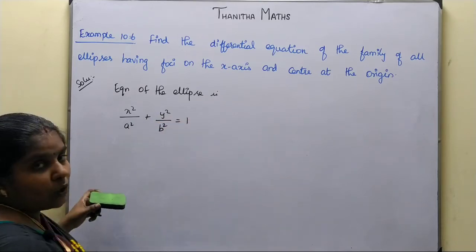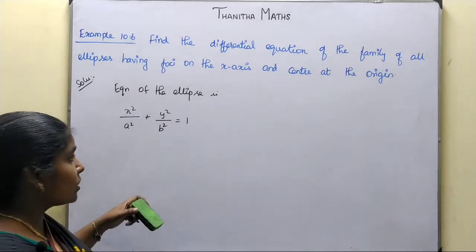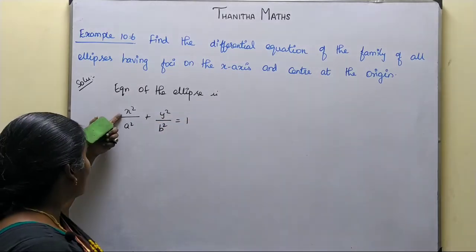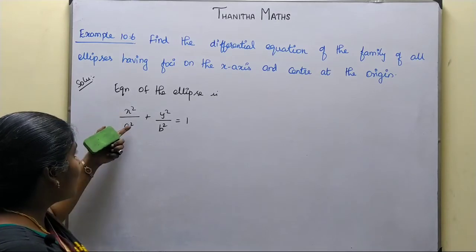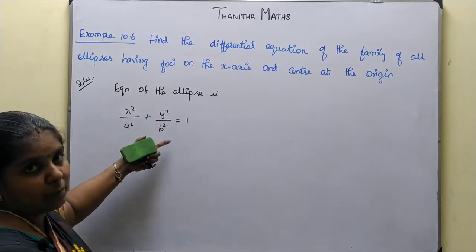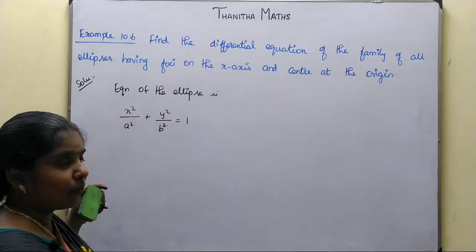Suppose foci on the y-axis, then the equation becomes x-squared by b-squared plus y-squared by a-squared equal to 1.